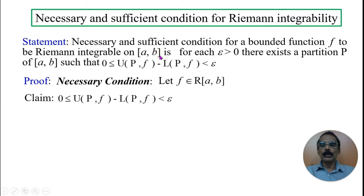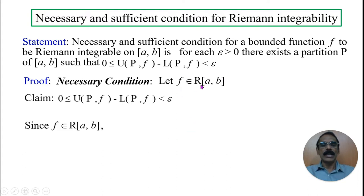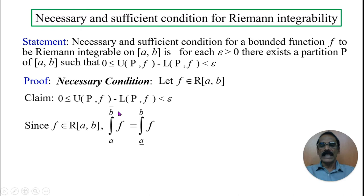What do we have to prove? We have to prove that for a given epsilon, there exists a partition P such that 0 ≤ U(P, f) − L(P, f) < epsilon. Since f is Riemann integrable, by the definition of Riemann integrability, the upper Riemann integral equals the lower Riemann integral.